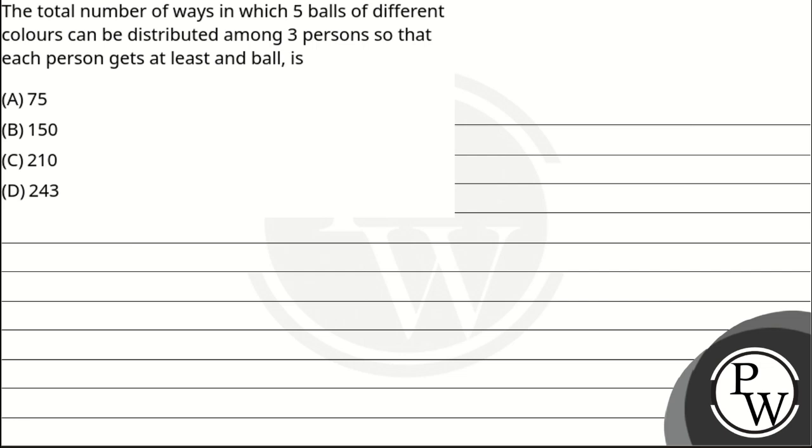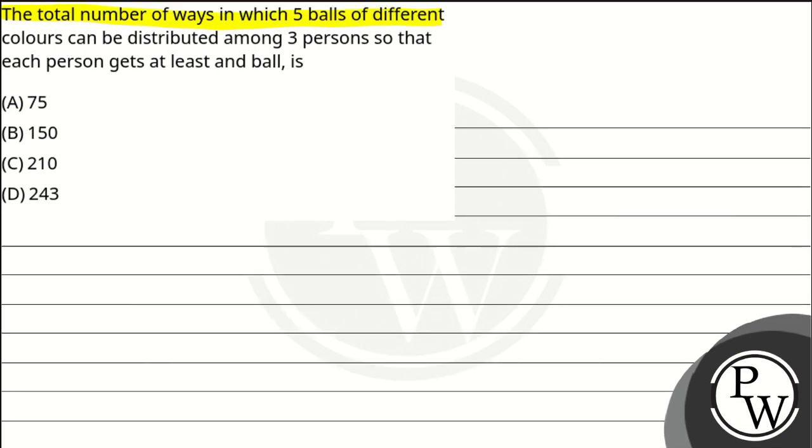Hello viewers, let's see this question. The question says the total number of ways in which 5 balls of different colors can be distributed among 3 persons, so that each person gets at least one ball is.